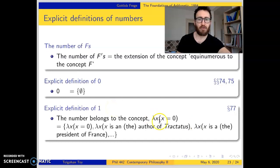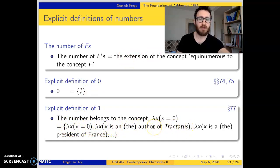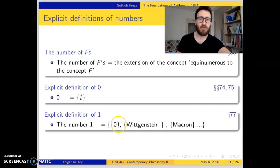What concepts fall under that extension? λx[x is identical to zero], λx[x is the author of the Tractatus] — under which Wittgenstein falls — and all other concepts under which only one object falls.